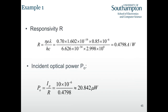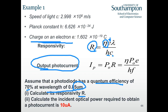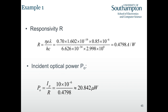Here's a simple example. The parameters - speed of light, Planck's constant, and charge on an electron - are all given. The equation for responsivity is given, and the output photo current equation is here. Quantum efficiency is given and you need to calculate R. Since H, C, E, and wavelength are all known or given, you can calculate R quite easily. Then, based on this responsivity and a given current, you calculate how much optical power is required: P0 equals current divided by responsivity.